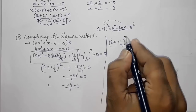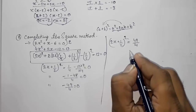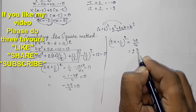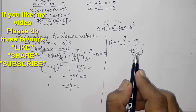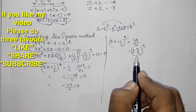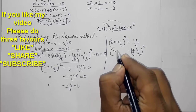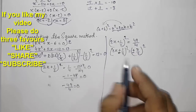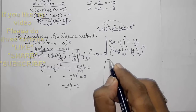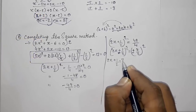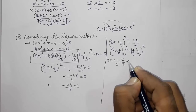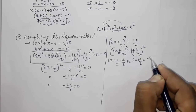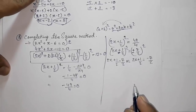Taking −49/4 to the other side: (2x + 1/2)² = 49/4. Taking the square root of both sides gives 2x + 1/2 = ±7/2. So we solve two cases: 2x + 1/2 = +7/2, or 2x + 1/2 = −7/2.